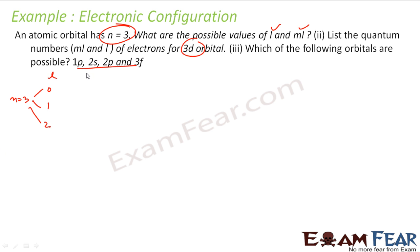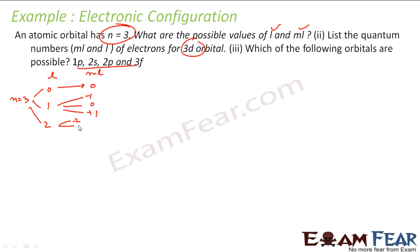For L is equal to 0, ML will be 0. For L is equal to 1, ML can be minus 1, 0, and plus 1. For L is equal to 2, ML can be minus 2, minus 1, 0, plus 1, and plus 2. So these are all the possible values.